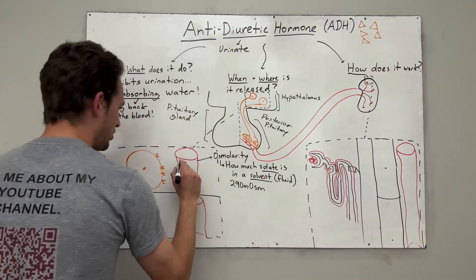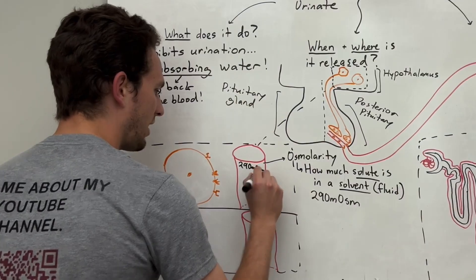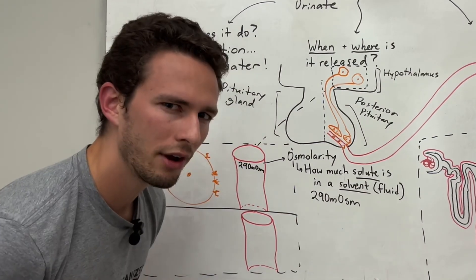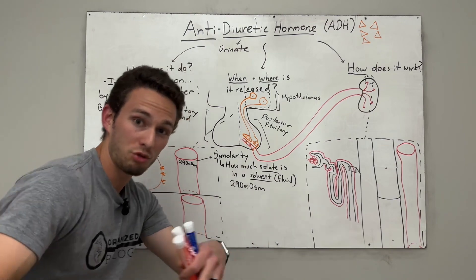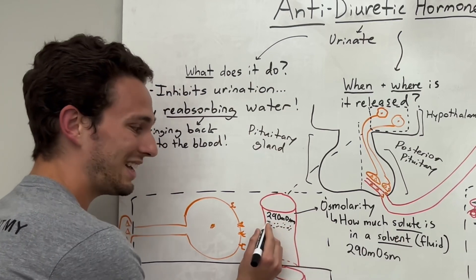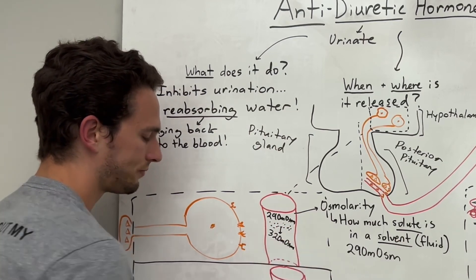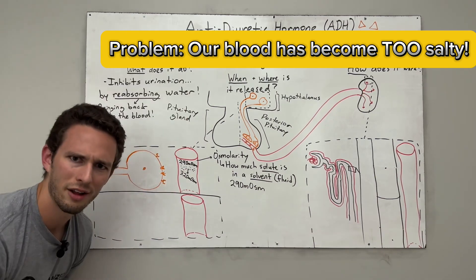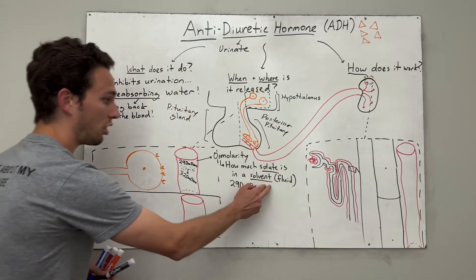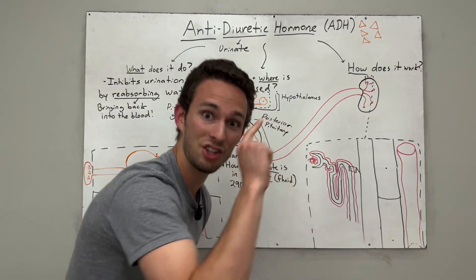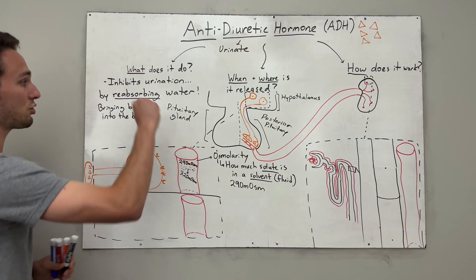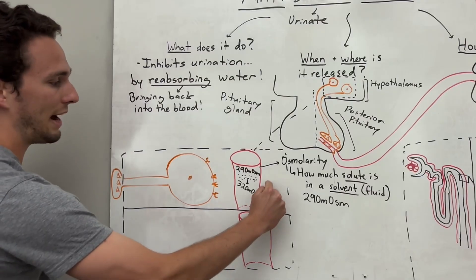In the bloodstream, after you ate all that salty popcorn, we're going to go from 290 milliosmols to — what do you think? If you ate a bunch of salty popcorn, do you think this number is going to go up or go down? Well, if the popcorn is really salty, that's solute. And if you're dumping a lot of that into the bloodstream, more and more solute, we're actually going to increase that number — maybe to 320. So our blood has become too salty. What do we do? Well, if we're too salty, can't we dilute it? We need to add more solvent or fluid. And that's exactly what antidiuretic hormone does — it brings water, the solvent, back into the blood, and it's going to help take that number back to homeostasis.